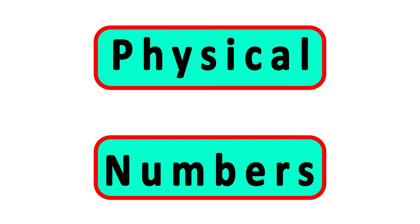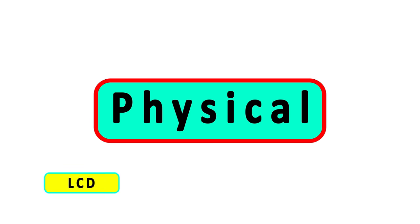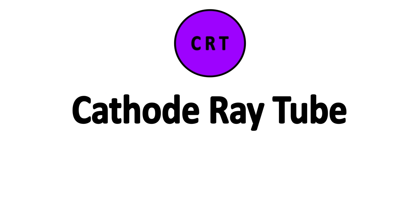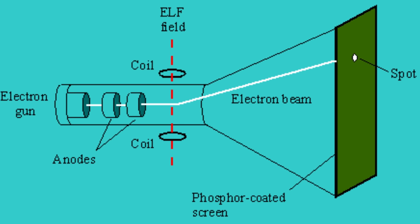Before we get to the numbers and software part of this, let's briefly talk about the physical component of how pixels work. There are actually quite a few different ways this is accomplished, and various methods have been used over the past few decades. I'm going to skip over CRT monitors because they're vastly outdated and function in a very different way — nevertheless, these monitors are very interesting and use really brilliant technology, so I encourage you to look into how they work.